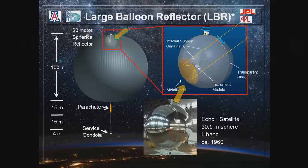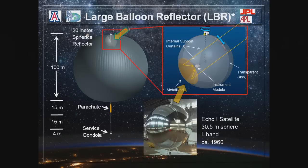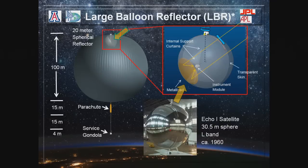Is this totally crazy? No — it's crazy enough for NIAC, but not totally crazy. This basic idea has been around a long time. Here is ECHO-1, a 30.5-meter diameter aluminized Mylar sphere from circa 1960, inflated in orbit as a passive reflector. My dad pointed it out to me after a PTA meeting when I was a little kid. Everything I'm saying about this for stratospheric work, you could also do in orbit — because it's been done before. Eisenhower had the first communication through a satellite like this.